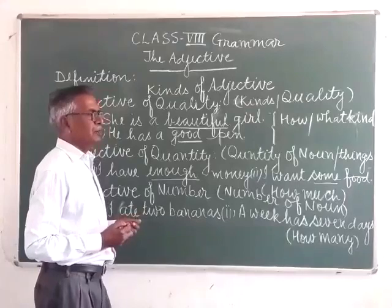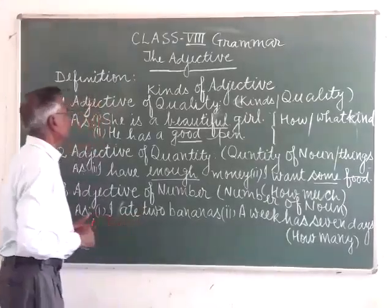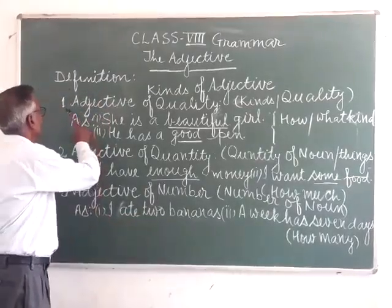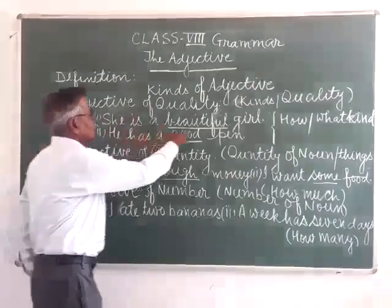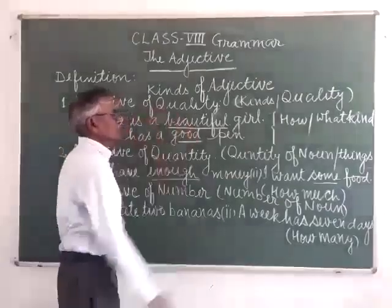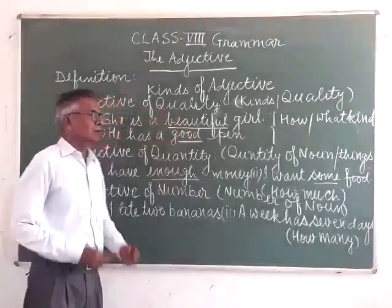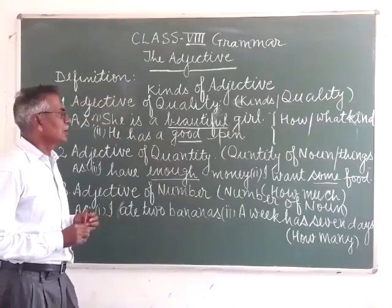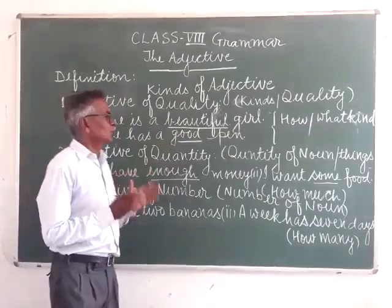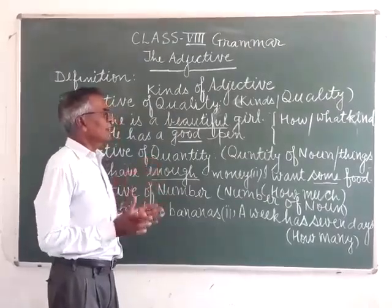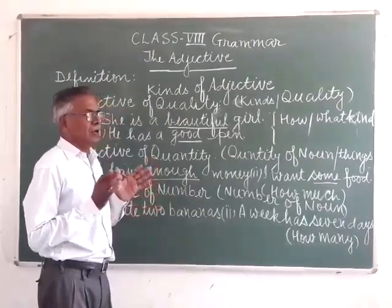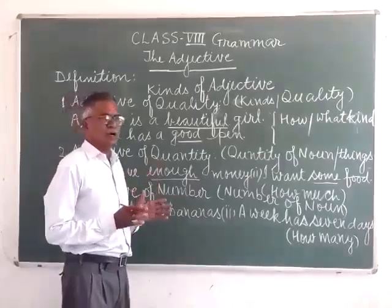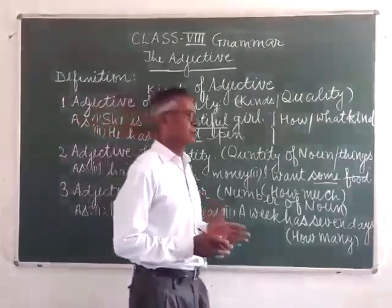Among those seven kinds, the first is the adjective of quality. The adjective of quality denotes the kind or quality of the noun or pronoun.